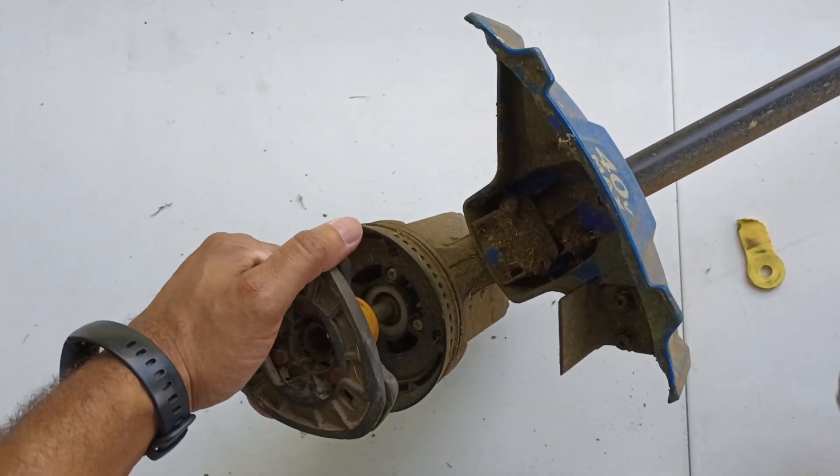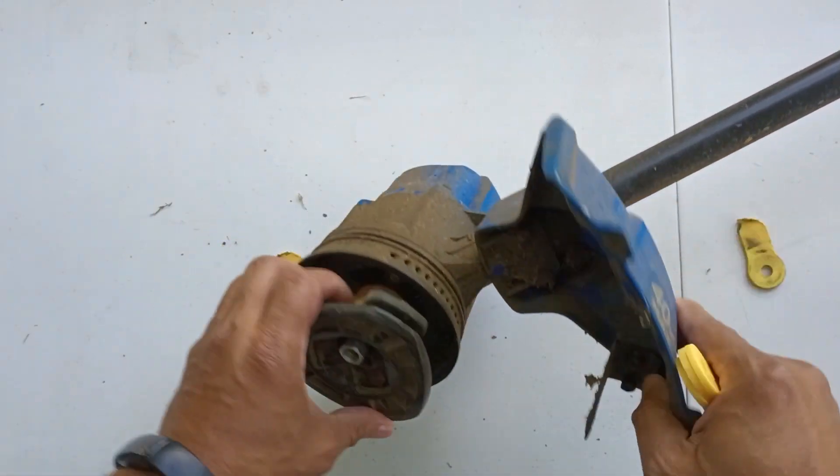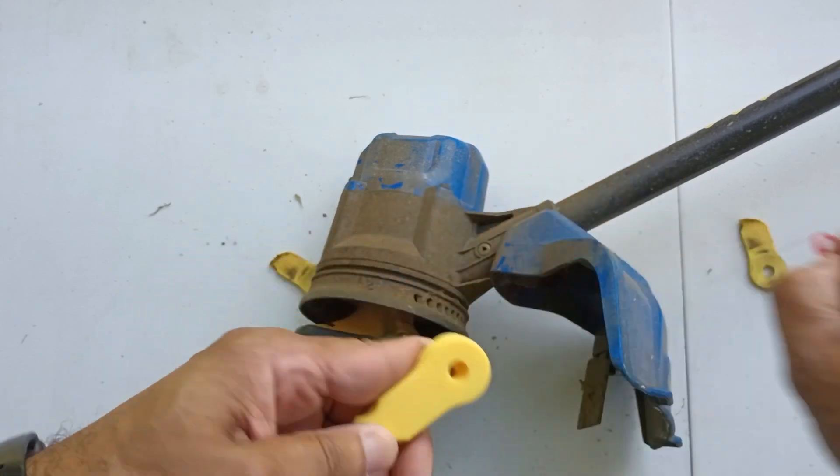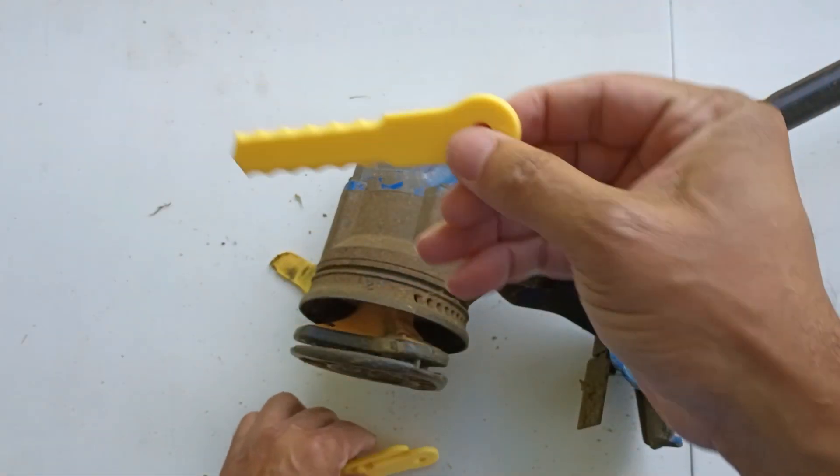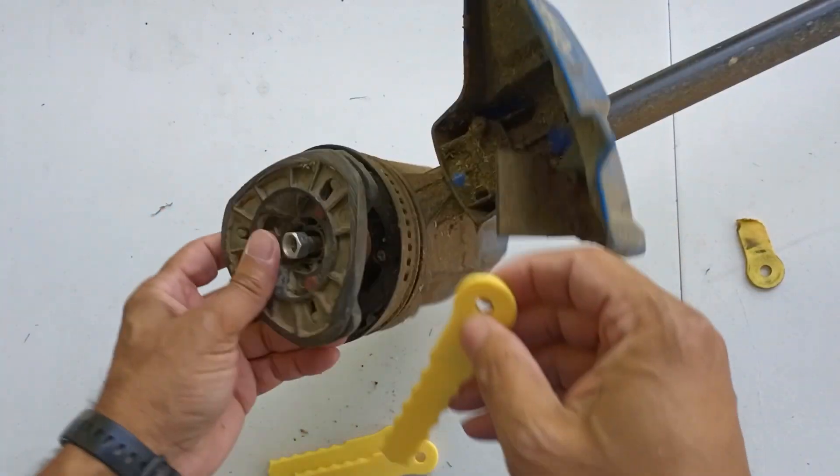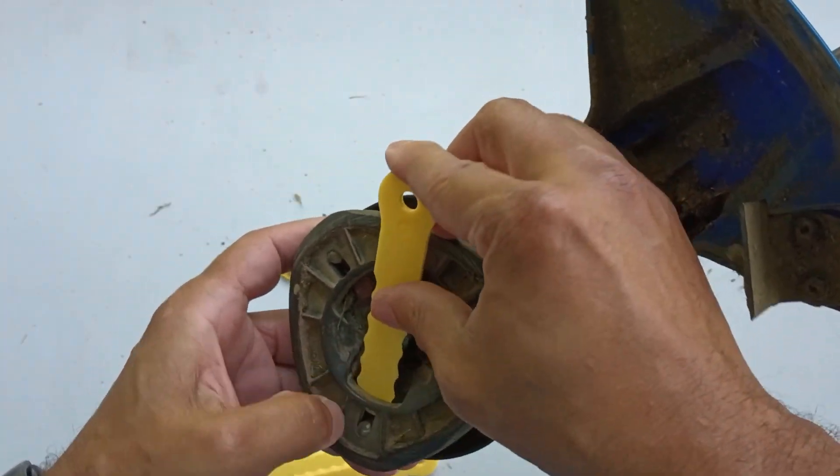There we go. So now installation is pretty straightforward. I'm just going to take this rubber band off. It doesn't really matter. I think you should probably have it this way because I think that's the way the blades are supposed to be. Super simple. You just push it down on it.